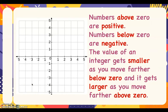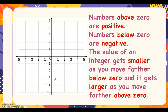In a number line you can use a horizontal or vertical line. On a vertical number line, numbers above zero are positive numbers and numbers below zero are negative. The value of an integer gets smaller as you move farther below zero, and it gets larger as you move farther above zero.